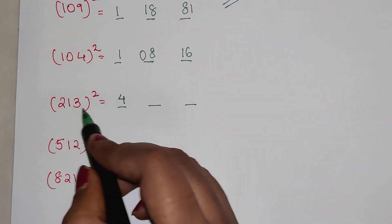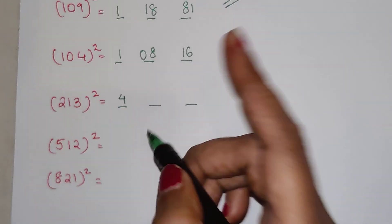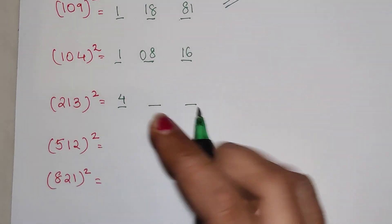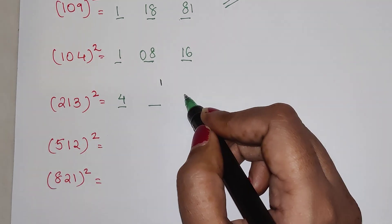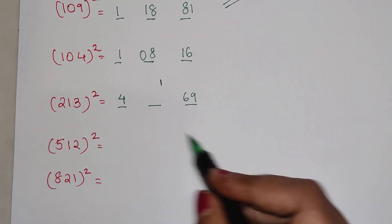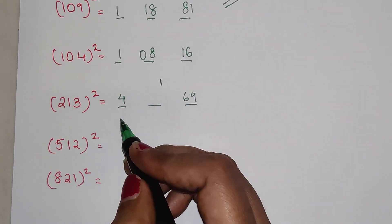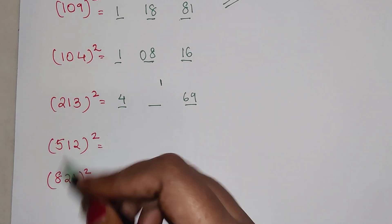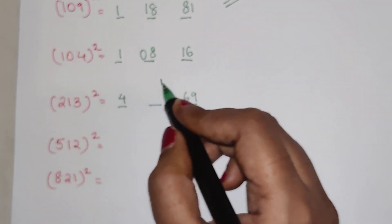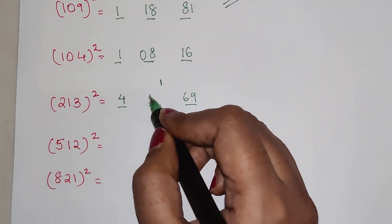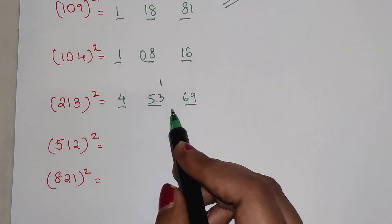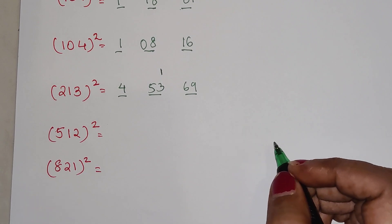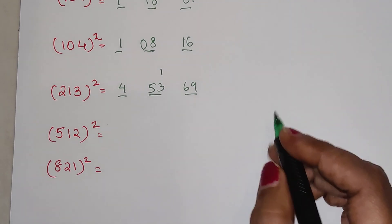Now let's do this quickly for bigger numbers. For 213², we have: 2² = 4, then 13² = 169 — but we only need two digits, so we keep 1 as carry and write 69. Then we multiply 2 into 13 = 26, times 2 = 52, plus the carry of 1 gives 53. So the final answer for 213² is 45369.